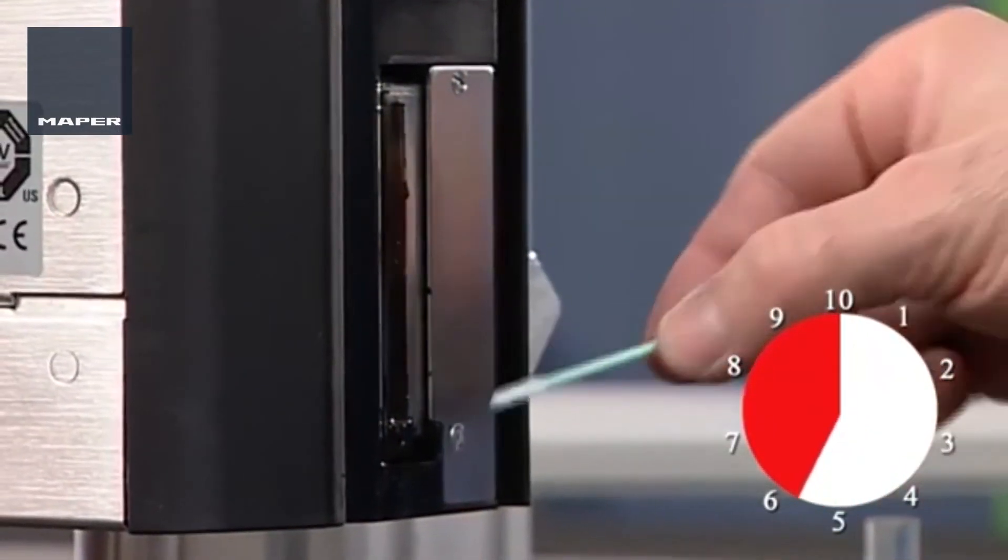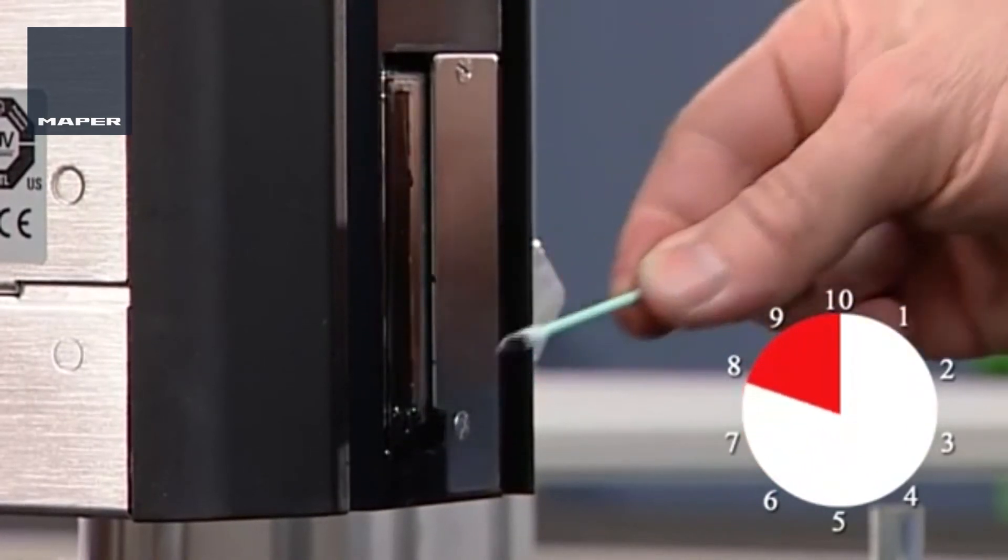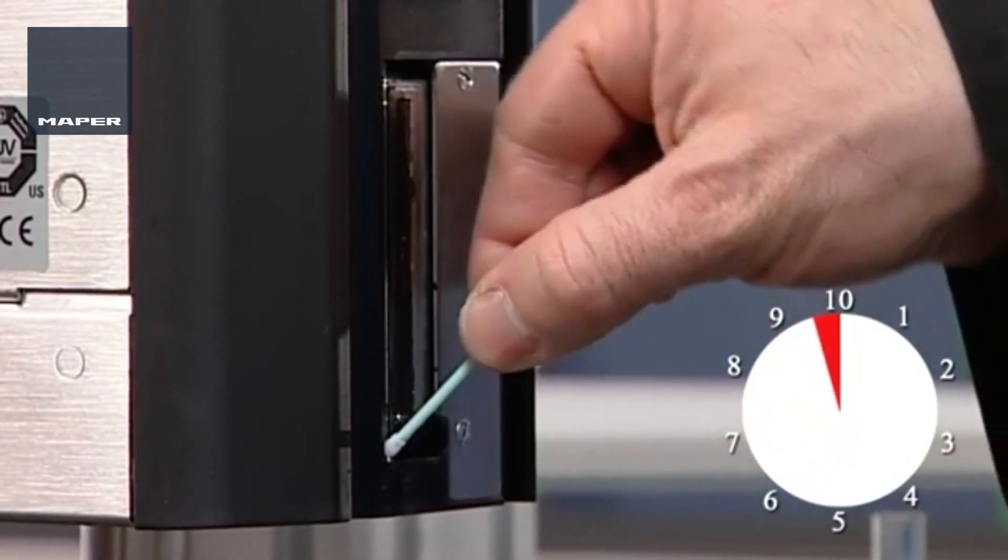Use the cleaning swabs to remove debris from the collector cup and make sure that the hole at the bottom of the collector cup is not obstructed.